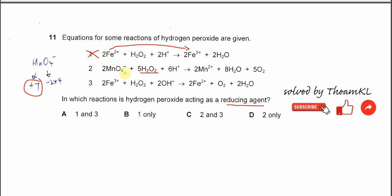After reaction, it's reduced from positive 7 to positive 2. This means the permanganate ion gets reduced, so H2O2 is a reducing agent. The second reaction is the answer.